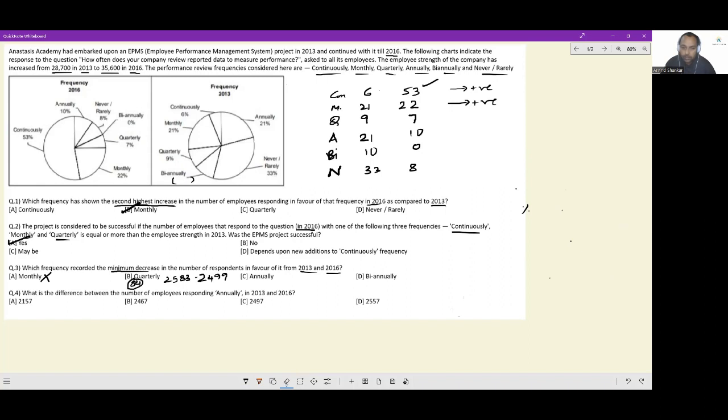Now let us do the same working for annual and biannual. For biannual it is easy, 10% of 28,700 minus 0% of something will be 2,870 directly. The work for annual would be 21 into 287 minus 10 of 3,560. Can you see even if this was 20 you would have 5,600 minus 3,560. This is definitely greater than 84 that we had arrived for quarterly. So the minimum decrease is happening for the quarterly option and that minimum decrease is 84.